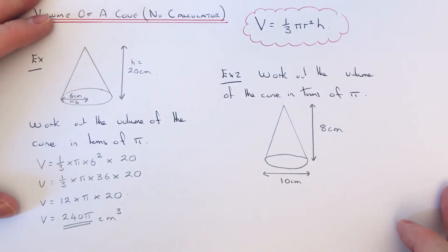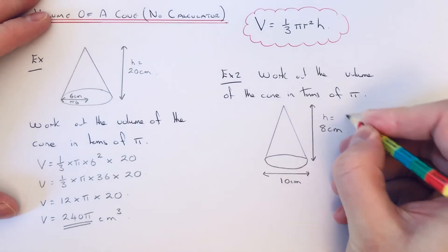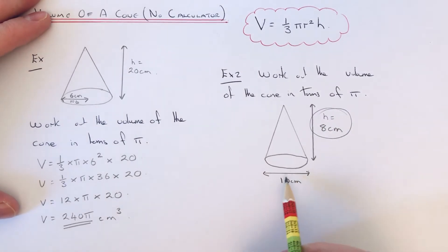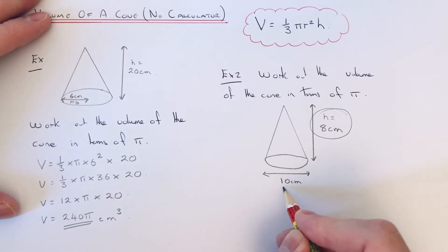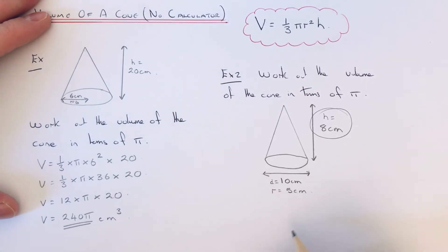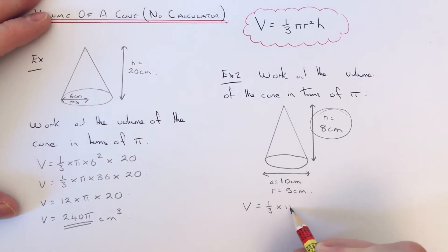Let's move on to the second example. We've got to work out the volume of the cone in terms of pi again. We've got the height which is 8. We have to be careful on this one because this is the diameter of the circle. So if we half that diameter that would give us the radius which is 5. Again, if we put our numbers into the formula, it would be one third times pi times 5 squared multiplied by the height which is 8.